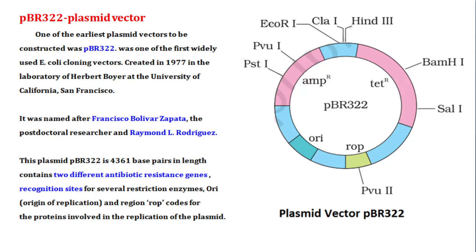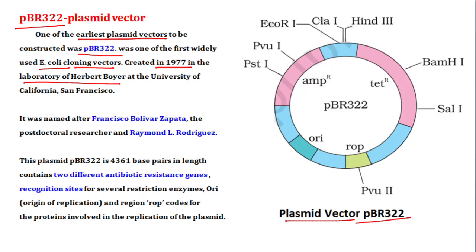The first artificially constructed plasmid and one of the earliest plasmids ever made is PBR322. It was one of the first widely used E. coli cloning vectors, created in 1977 in Herbert Boyer's lab at the University of California.